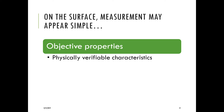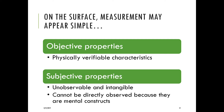Moving on, on the surface measurement may appear simple. A variable, as a measurement of a characteristic, has several properties. One of them is objective properties — physically verifiable characteristics. We can count them, we can see them, we can determine the shape, and things like that.